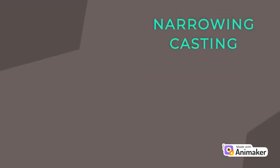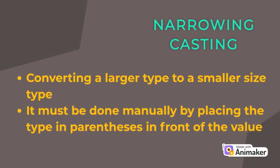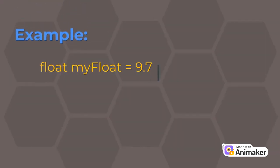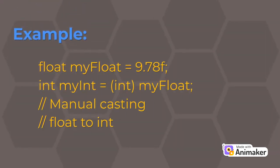Narrowing casting is done when converting a larger type to a smaller size type and it is done manually. For example, here we are converting a float value to an integer value, and here we do the type casting manually.